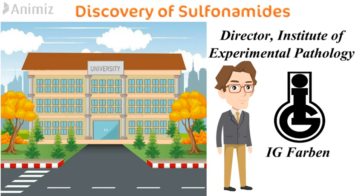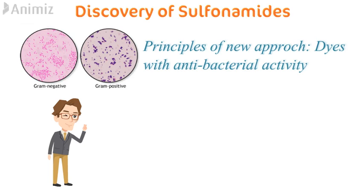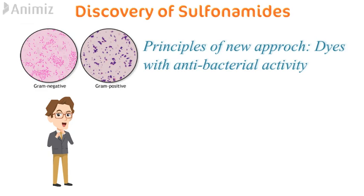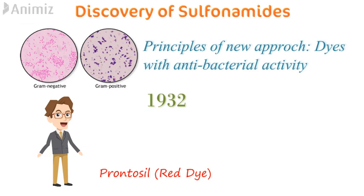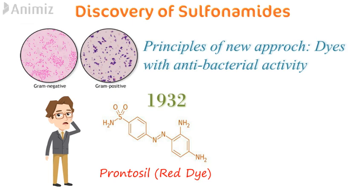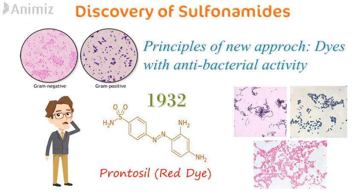At IG Farben, he was working to find a new antibacterial agent based on principles laid down by Paul Ehrlich. It was already known that bacteria take up dye during staining, so different dyes were tested for their antibacterial activities. In 1932, the very first sulfonamide drug — a red dye called Prontosil — was discovered. This drug Prontosil was effective against Staphylococcus, Streptococcus, and E. coli bacteria. The scientist whose story we have been telling was Gerhard Domagk, who discovered Prontosil.